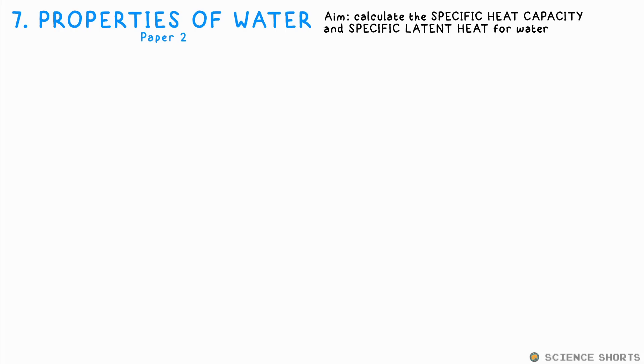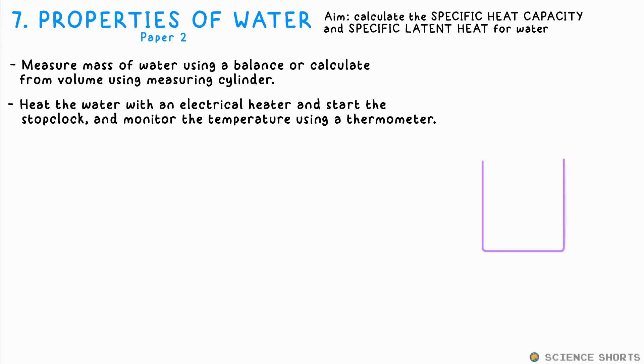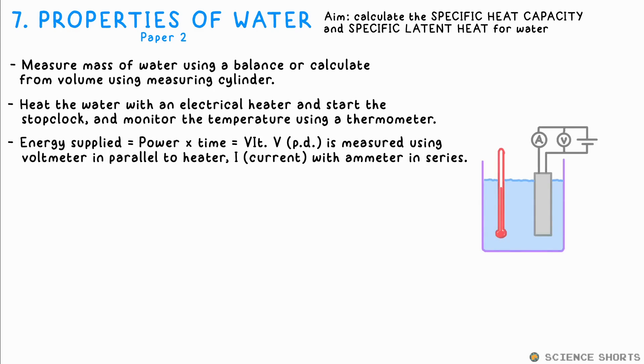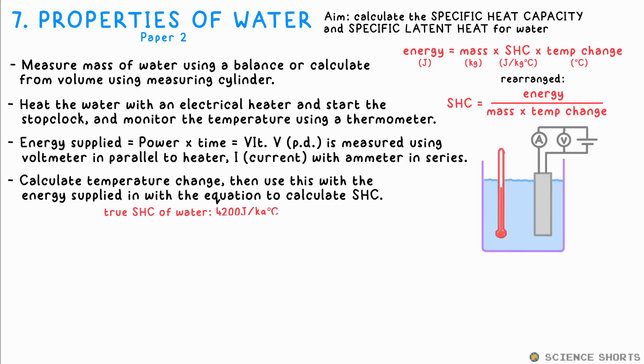Physics seven, properties of water, that's SHC and SLH. We want to calculate the specific heat capacity and specific latent heat of fusion of water. We heat water in a beaker with an electric heater. The current and PD supplied are used to calculate the power to the heater, then we multiply that by the time and that gives us the total energy input. Measuring the change in temperature of the water using a thermometer or temperature probe along with the mass allows us to calculate its SHC, which hopefully is close to the true value of 4200 joules per kilogram per degree C.